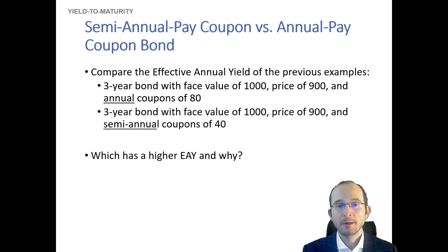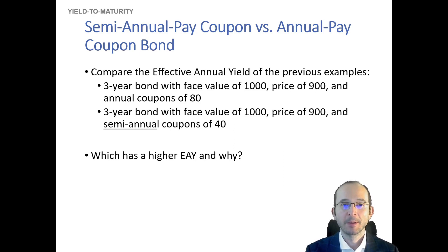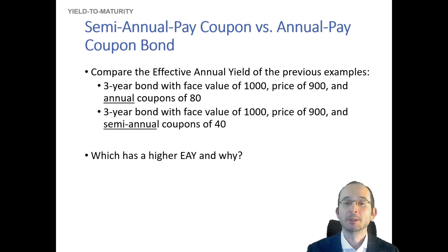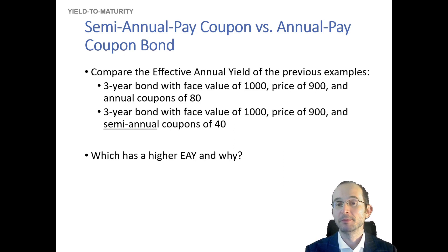So now let's compare the effective annual yield for two bonds. One bond has an annual coupon of 80 but pays it all at once, once per year. The other has an annual coupon of 80 but pays it semi-annually — in other words, two payments of 40. What would we expect in terms of effective annual yield for both bonds, and why would there be a difference?